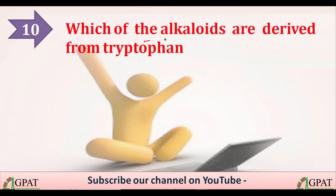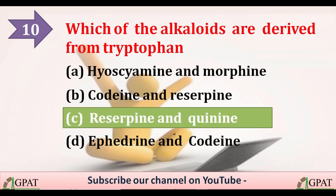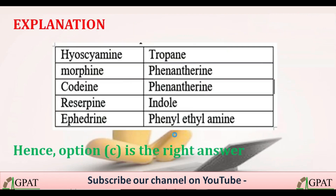Last question: which of the following alkaloids are derived from tryptophan? Option A is hyoscyamine and morphine, option B is codeine and reserpine, option C is reserpine and quinine, option D is ephedrine and codeine. The correct answer is option C — reserpine and quinine. Hyoscyamine is derived from tropane, morphine and codeine from phenanthrene, reserpine from indole, and ephedrine from phenylethylamine. This is all about this video; thanks for watching.